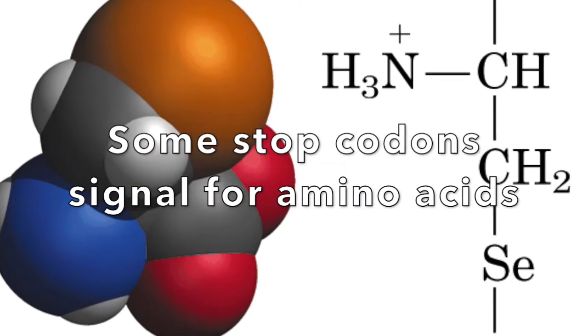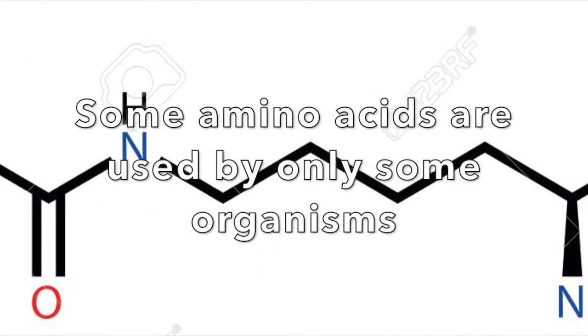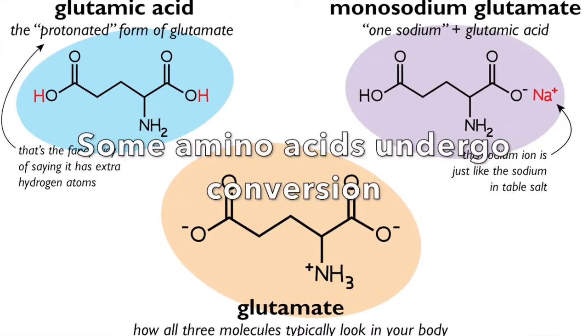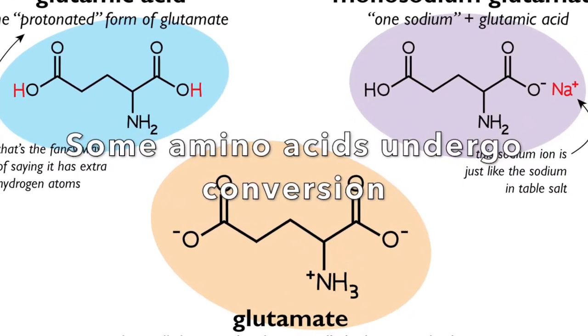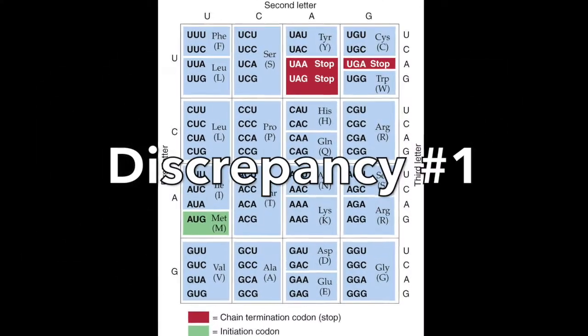Second, some amino acids are used only by specific clades. And lastly, some amino acids undergo conversion in order to produce a stable protein. First, let's discuss one known as selenocysteine.